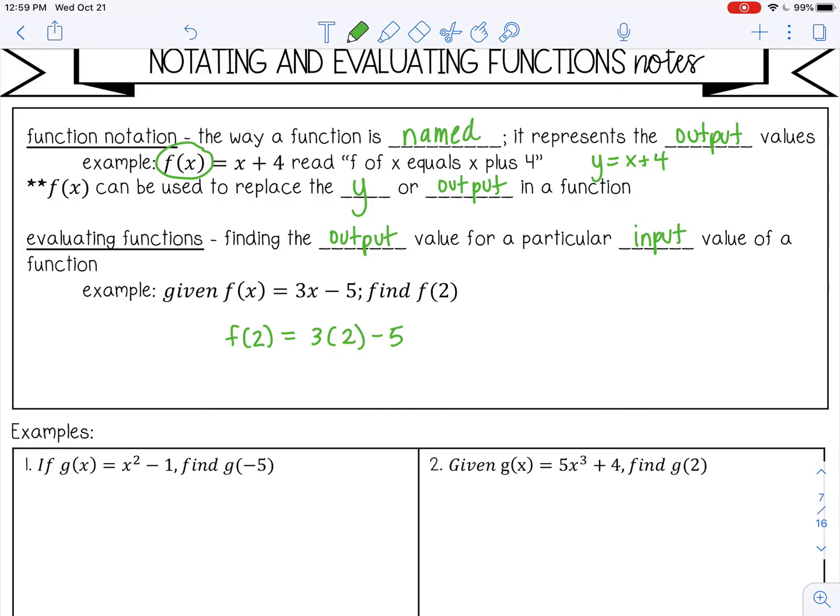Let's see. That would be 3 times 2 is 6 minus 5, which is 1. So f of 2 equals 1.